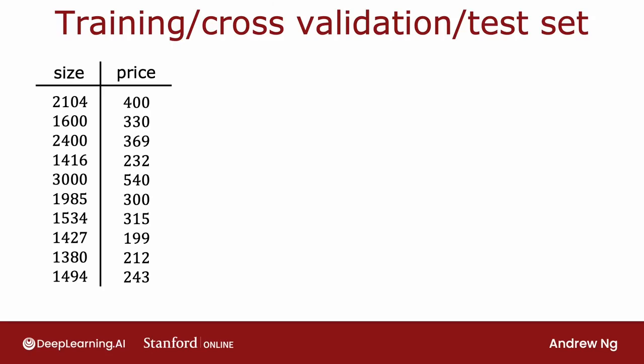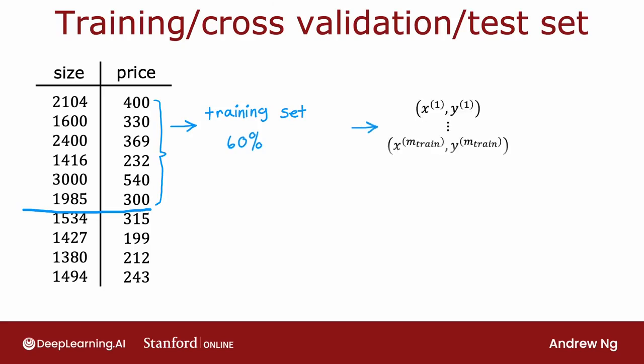The way we'll modify the procedure is: instead of splitting your data into just two subsets—the training set and the test set—we're going to split your data into three different subsets: the training set, the cross-validation set, and the test set. Using our example of 10 training examples, we might put 60% of the data into the training set, so mtrain, the number of training examples, equals 6.